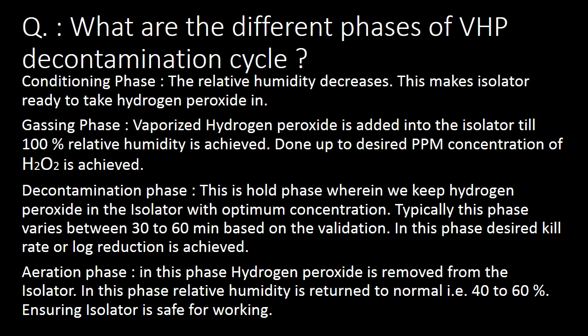The final stage is the aeration phase. In this phase, hydrogen peroxide is removed from the isolator, and relative humidity is returned to normal — that is 40 to 60% — ensuring the isolator is safe for working.